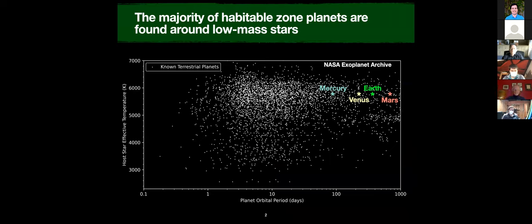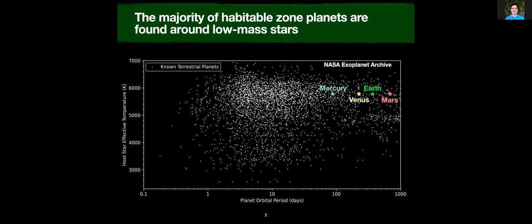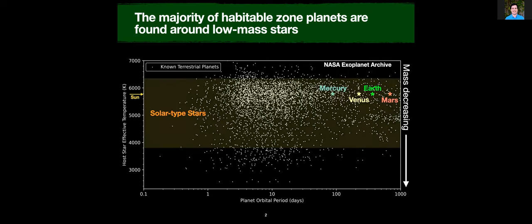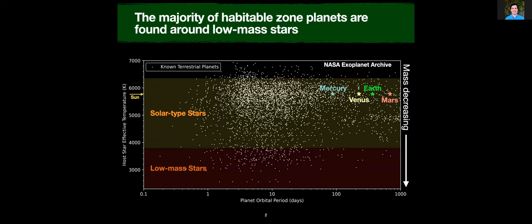On this plot, I'm showing you all the known terrestrial planets. The x-axis is the orbital period of the planet, which is basically a proxy for the orbital distance from its host star. On the y-axis, I'm showing the temperature of the host star. I've also plotted the terrestrial planets in our own solar system for reference, adding the Sun on the y-axis. Temperature is also a proxy for mass — as you decrease in temperature, you're decreasing in mass.